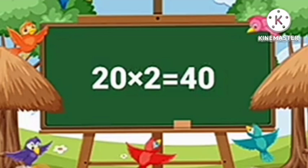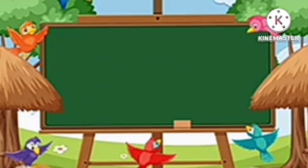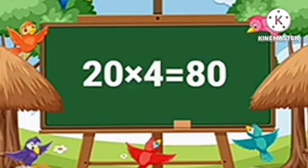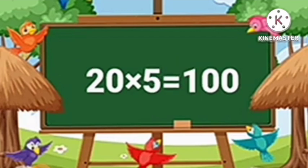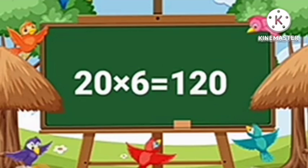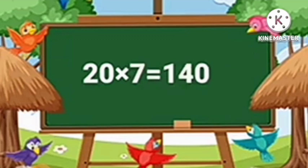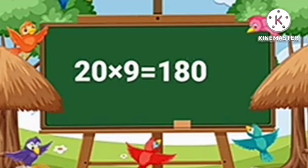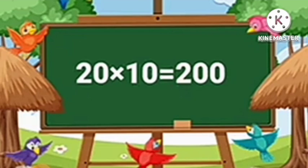Table of Twenty. Twenty-One's are Twenty. Twenty-Two's are Forty. Twenty-Three's are Sixty. Twenty-Four's are Eighty. Twenty-Five's are One Hundred. Twenty-Six's are One Hundred and Twenty. Twenty-Seven's are One Hundred and Forty. Twenty-Eight's are One Hundred and Sixty. Twenty-Nine's are One Hundred and Eighty. Twenty-Ten's are Two Hundred.